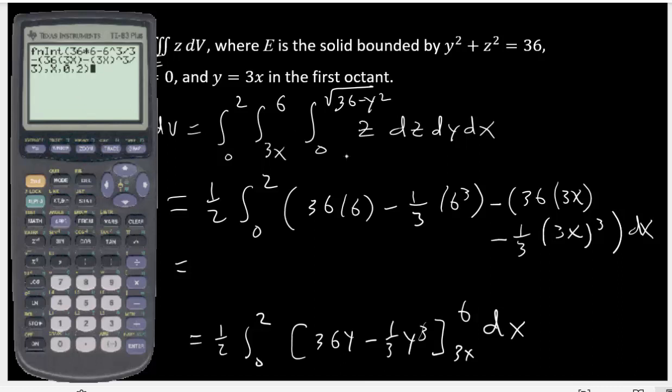Then type your function, which is 36 times 6, as you see there, then 6 to the 3 over 3, minus, now 36 times 3x, and then I have 3x to the 3 over 3, and don't forget to close the parentheses there, and then this will be with respect to x, and then the limits are 0 to 2, and then hit enter.